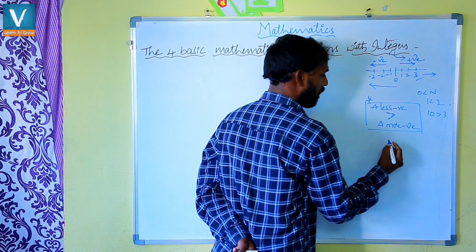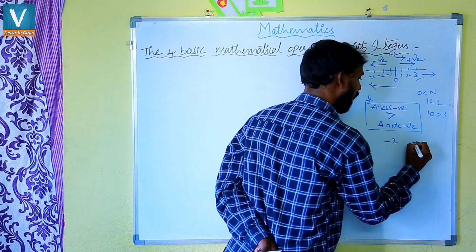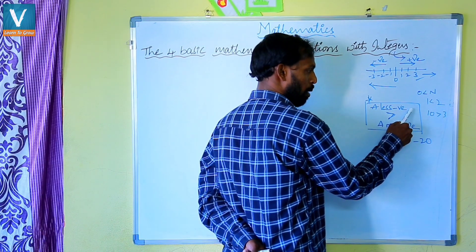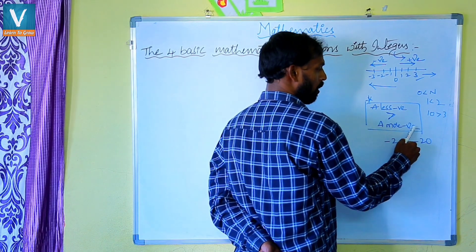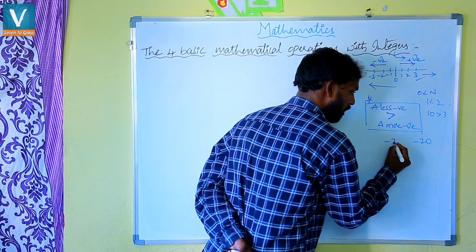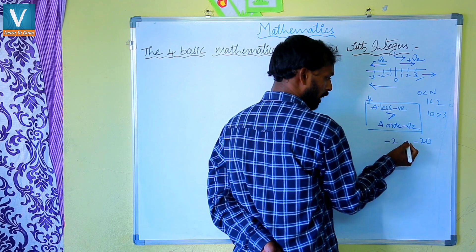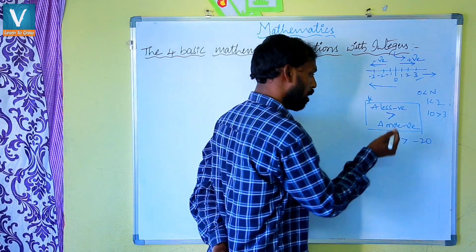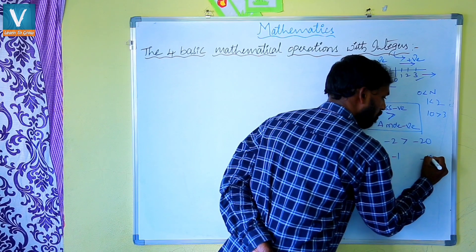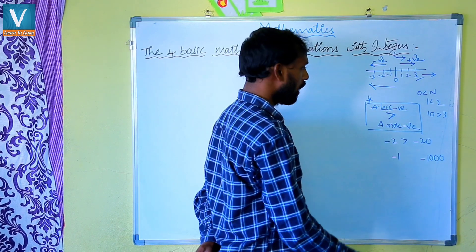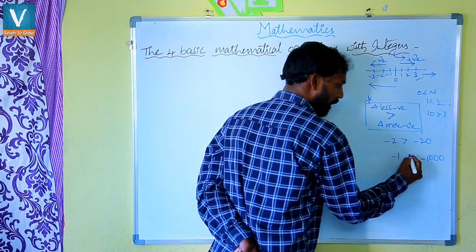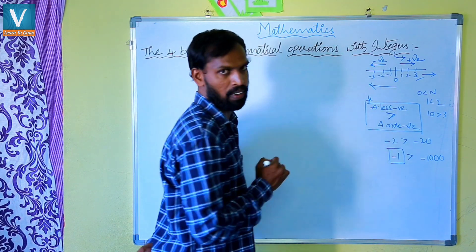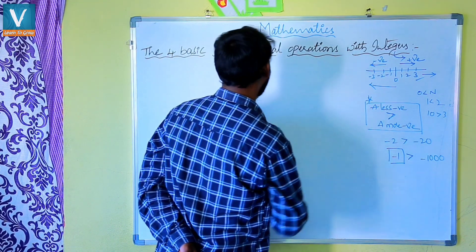For example, I am taking two negative integers: minus 2 and minus 20. A less negative number is greater than a more negative number. So minus 2 is less negative, therefore minus 2 is greater than minus 20. Similarly, comparing minus 1 with minus 1,000 — a less negative value is always greater, so minus 1 is the greater value.